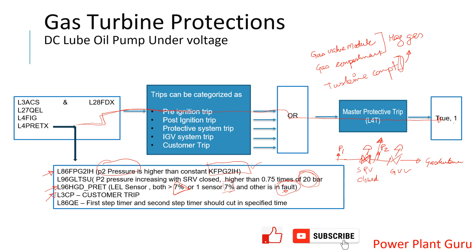The next component is L3CP, which is the customer trip. When there is only a single consumer connected to your gas turbine — whether a load, a compressor you are driving, or anything else — the system monitors that customer. If the customer is already tripping and there is no consumer, then the machine should not receive a healthy start signal, so that is the customer trip protection.